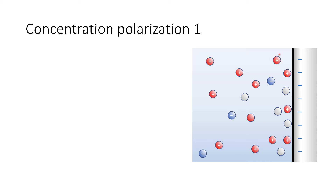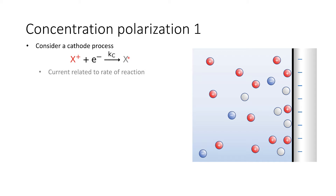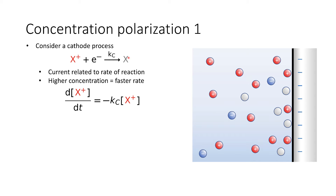Let's explore a cathode process — where we have a reduction of a cation. A cation picks up an electron at the cathode and is reduced to an uncharged species. The current is related to the rate of reaction, and a higher concentration means a faster rate — basic kinetics tells us the rate of change of our cation is proportional to its concentration. A faster rate means more electrons being supplied or removed from the electrode, giving a higher current through the external cell.